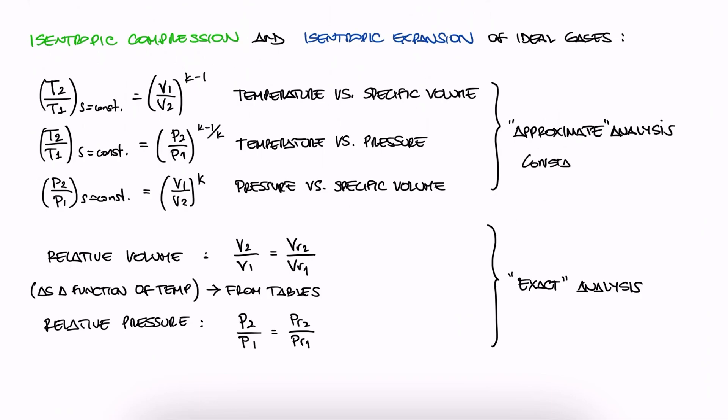This is what we labeled exact analysis, which we can use for ideal gases with variable-specific heats. Let's look at an Otto cycle example where we use part of what we learned today, and in the additional video examples linked below, you'll find more complex examples on this topic, including a temperature ratio relationship for gases with constant-specific heats.